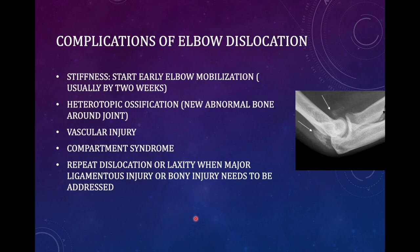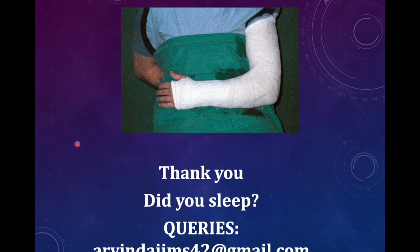Complications of elbow dislocation include stiffness — early mobilization must be started — and heterotopic ossification, because capsular attachments are avulsed and osteogenic cells form abnormal bone in abnormal spaces. Vascular injury and compartment syndrome can occur as with any complicated elbow injury. Recurrent dislocation or laxity can occur with major ligamentous or bony failure, such as lateral or medial condyle fractures which provide ligament attachment. Thank you.